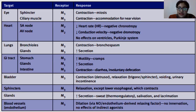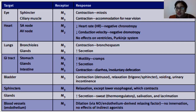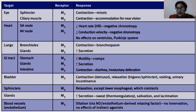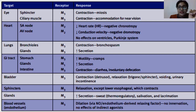For the GIT, muscarinic activity gives increased motility, increased secretion, and contraction, which leads to diarrhea and involuntary defecation. A person taking anti-muscarinic drugs would have reduced gastric secretions, reduced gastric motility, and severe constipation. Involuntary defecation — meaning you just can't control it — would be replaced by difficulty passing stool.